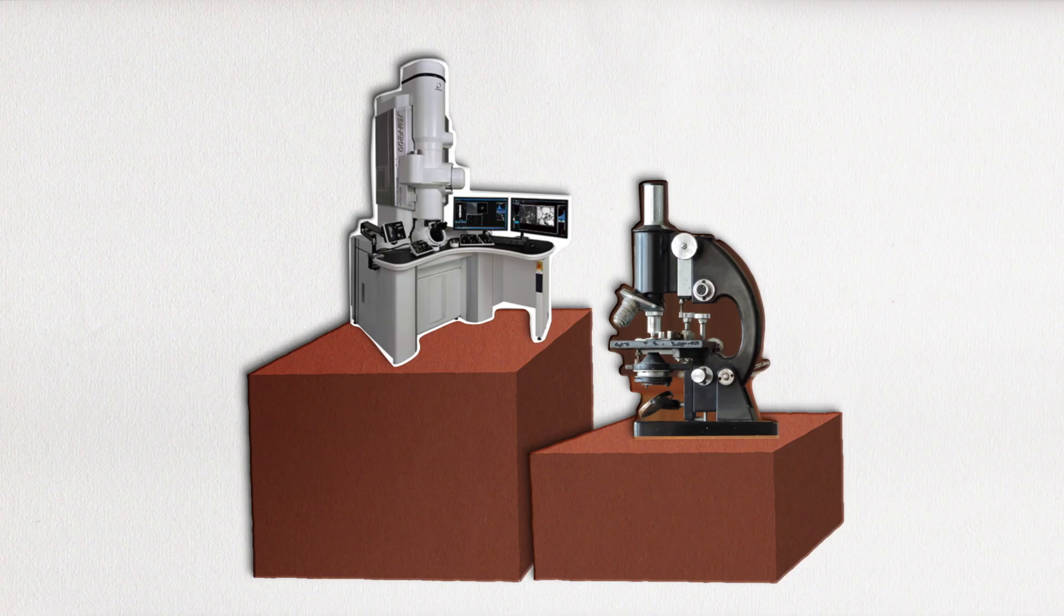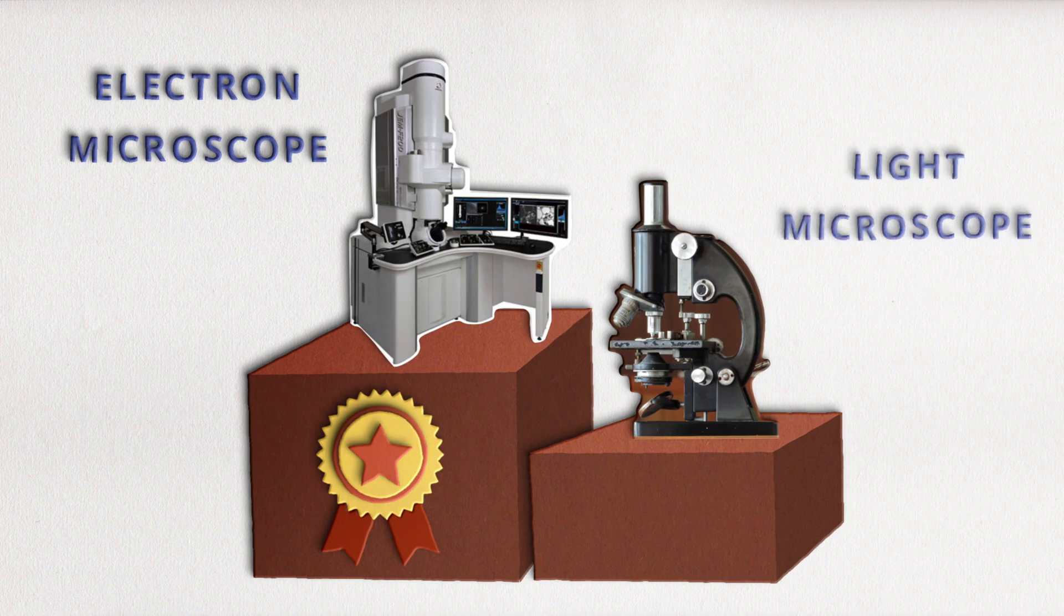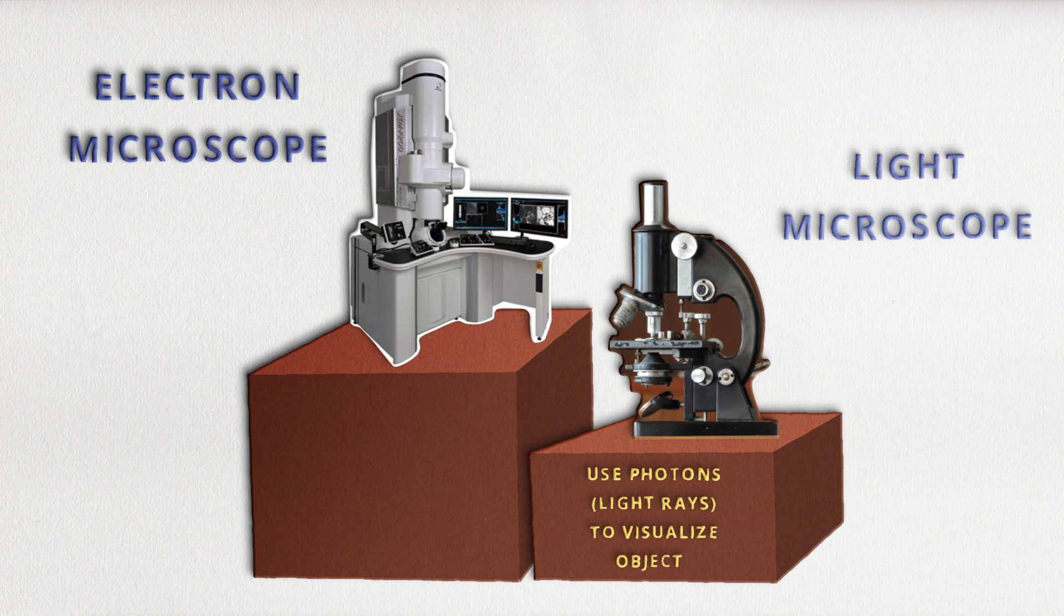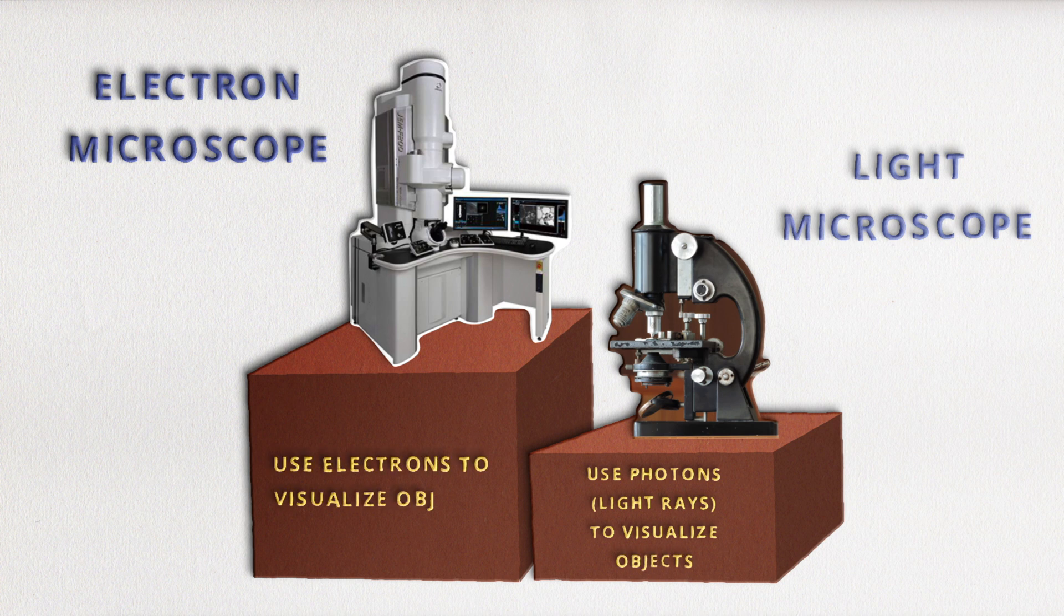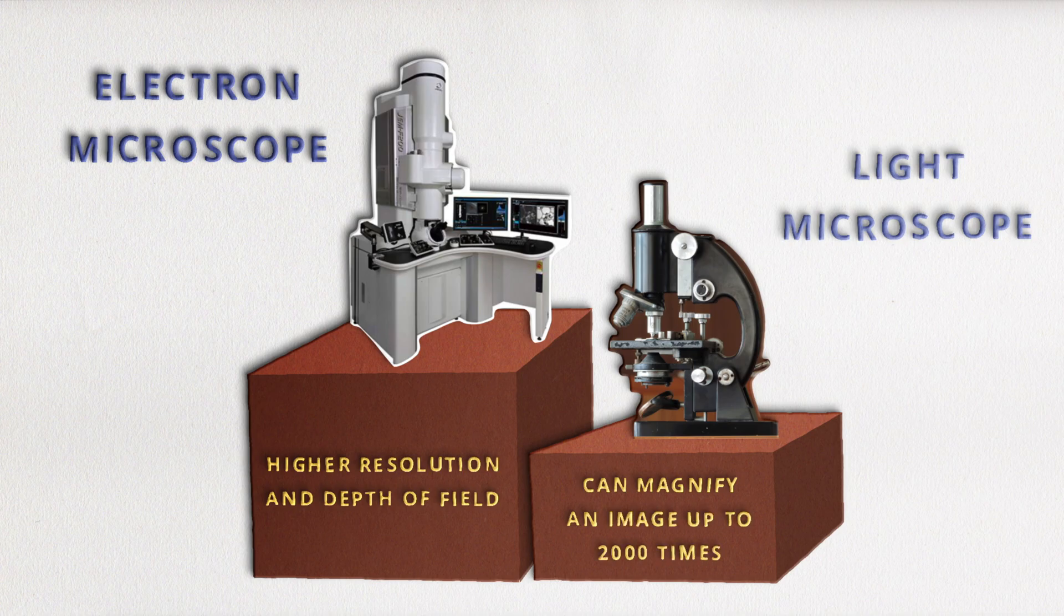The most powerful microscopes today are electron microscopes, not optical or light microscopes. Light microscopes use photons or light rays to visualize objects, whereas electron microscopes use, you guessed it, electrons. Electron microscopes have several advantages over optical microscopes, including higher resolution and depth of field. Electron microscopes can magnify an image up to 2 million times. By contrast, most light microscopes can only produce useful magnification up to around 2,000 times.